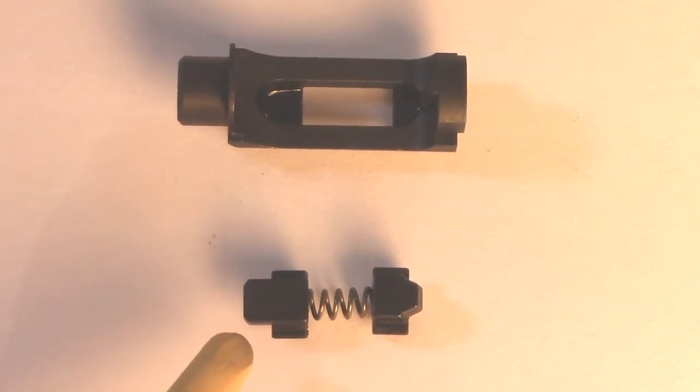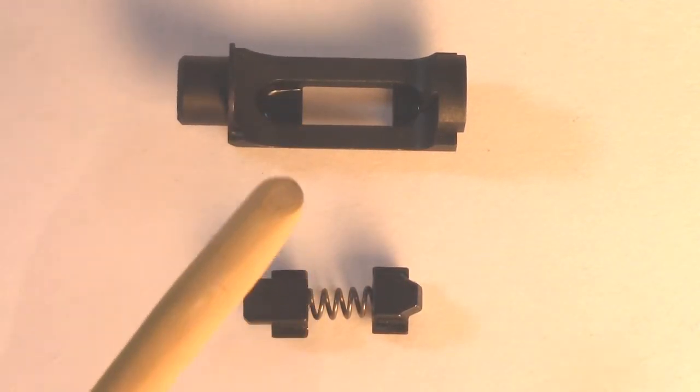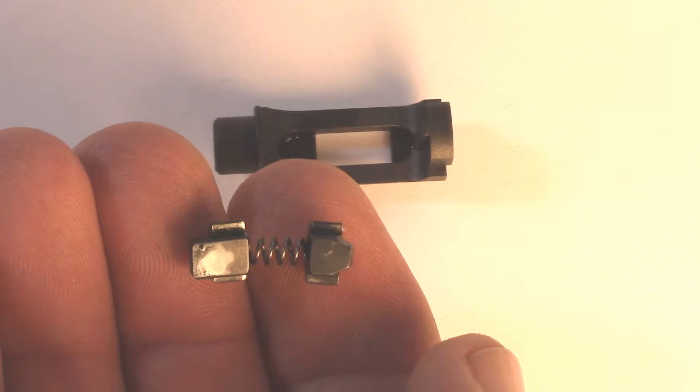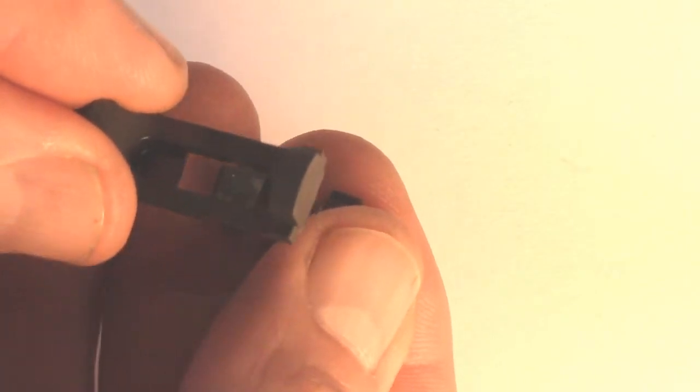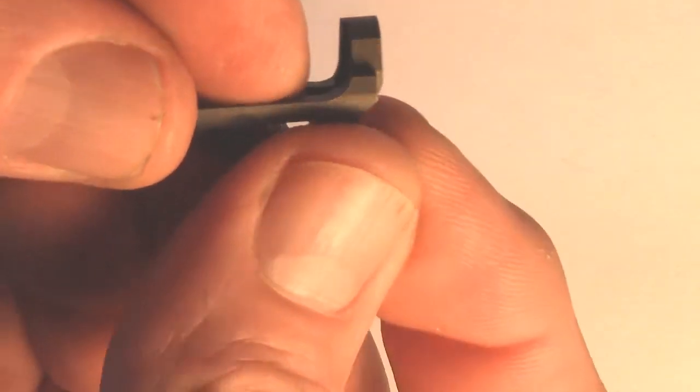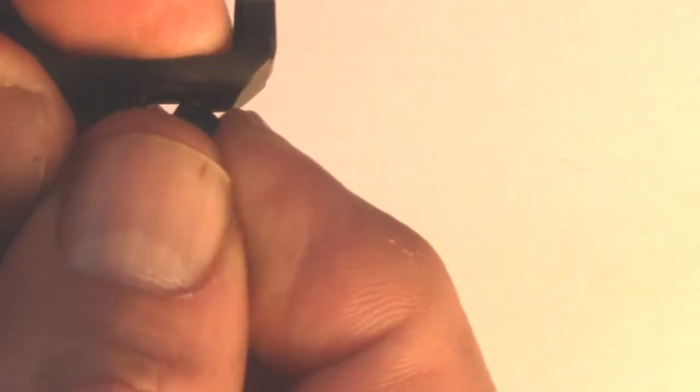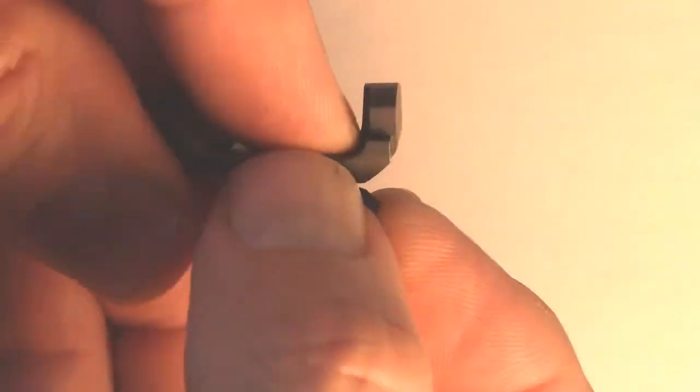Here is the correct orientation for assembling the spring into the magazine release button. If you feel that you may lose control of the spring, best perform this assembly in that plastic bag.